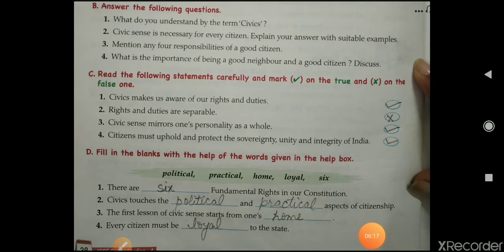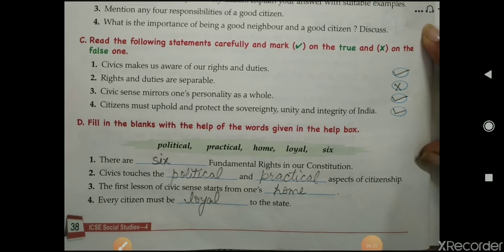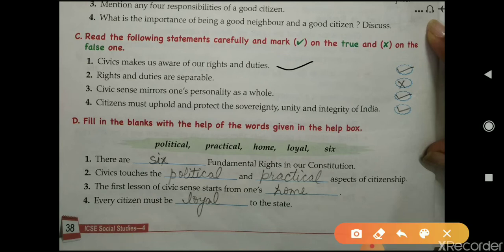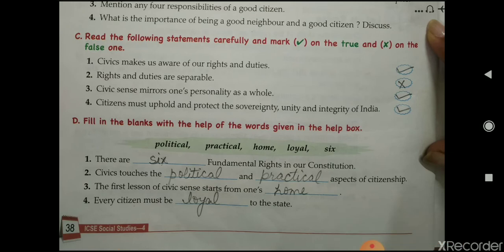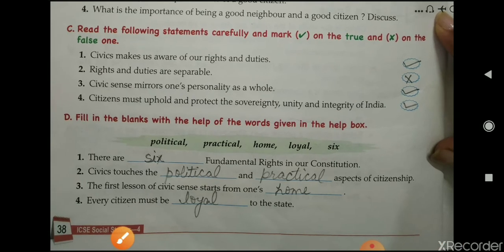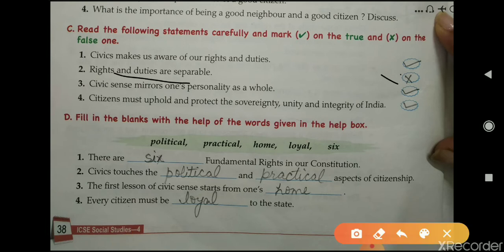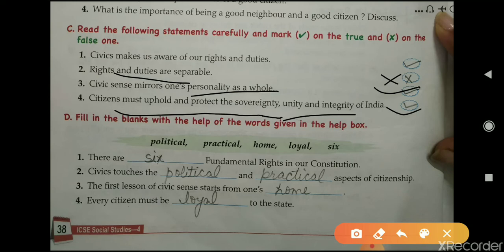Exercise C: read the following statements carefully and mark a tick for true and a cross for false. Statement 1: civics makes us aware of our rights and duties — this is TRUE. Statement 2: rights and duties are separable — this is FALSE; they are inseparable. Statement 3: civic sense mirrors one's personality as a whole — TRUE. Statement 4: citizens must uphold and protect the sovereignty, unity, and integrity of India — TRUE.